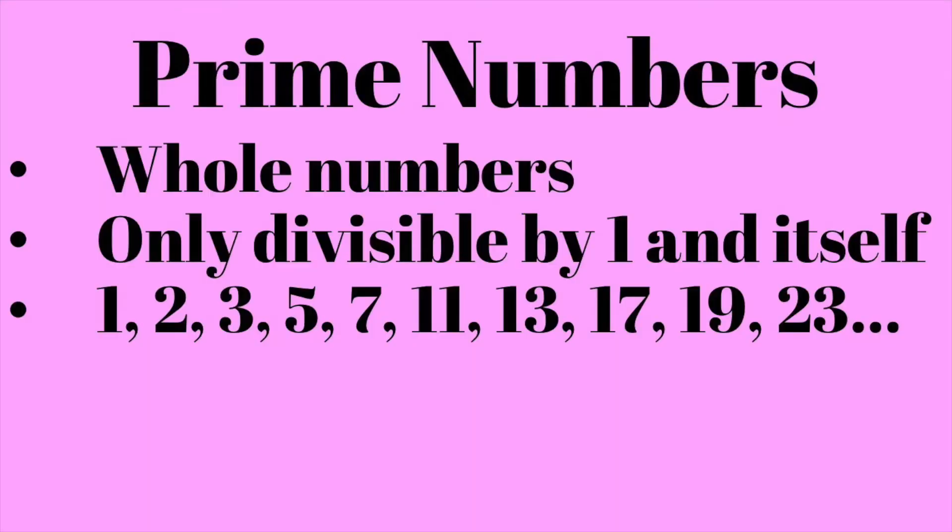The last two types of numbers are incredibly important, and without a doubt you will definitely see these concepts on the test. The first one is prime numbers. These are whole numbers that can only be divided by the number one and that number itself. So numbers like 2, 3, 5, 7, 17, and 23 are all prime numbers because there are no other numbers that would divide evenly into that original number.